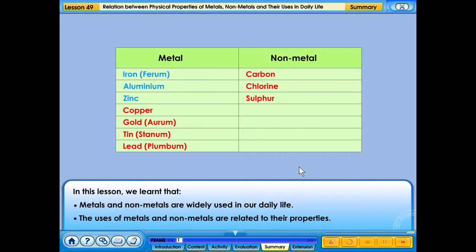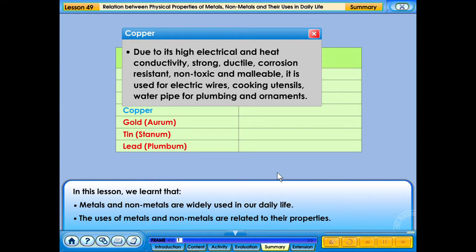Due to its high electrical and heat conductivity, strong, ductile, corrosion resistant, non-toxic and malleable, it is used for electrical wires, cooking utensils, water pipe for plumbing and ornaments.